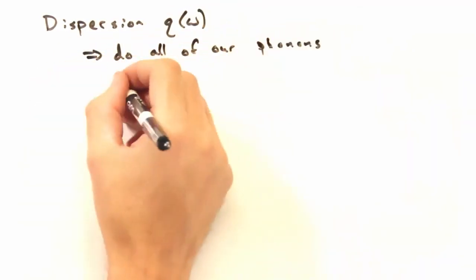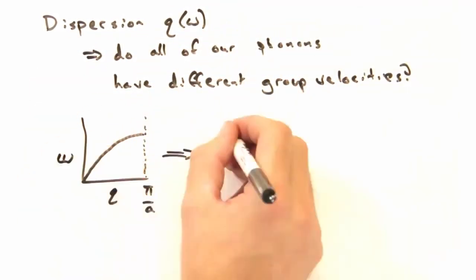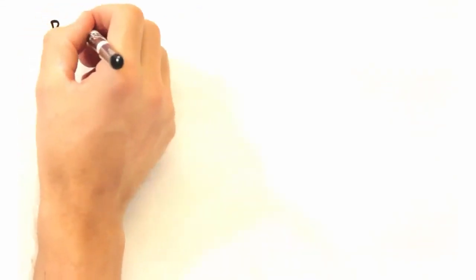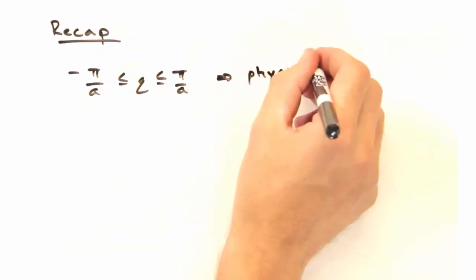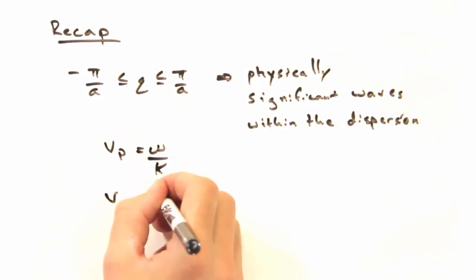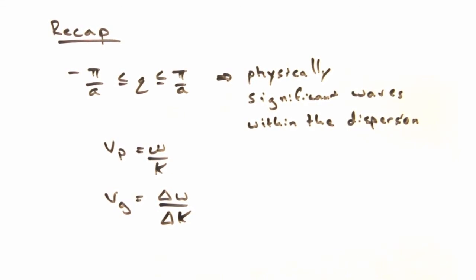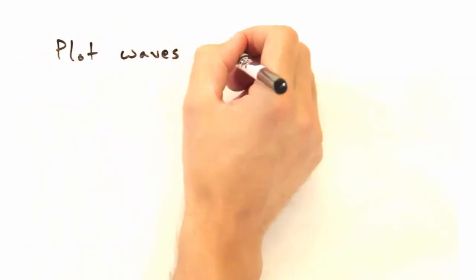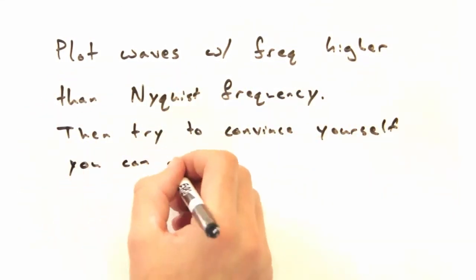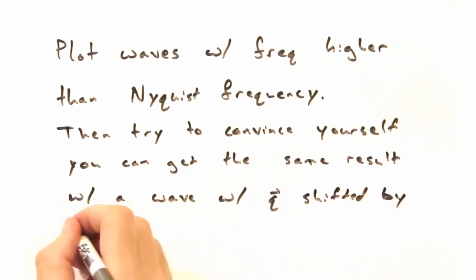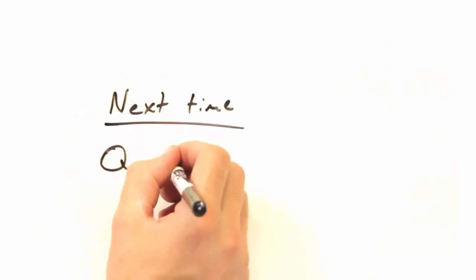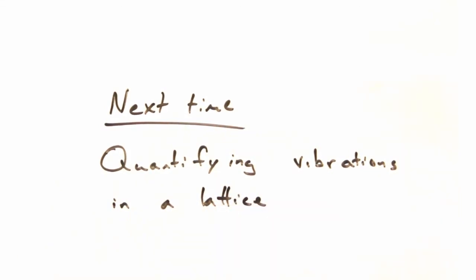Going back to our dispersion then, does that mean that all of our phonons have different group velocities? Looks like it's a good time for a recap. Today we found q values between minus pi over a and pi over a will give us physically significant waves within our dispersion. Then we used our dispersion to find the phase and group velocities of our wave. Before we end today's video, it would be a good idea to plot waves with frequencies higher than the Nyquist frequency and try to convince yourself you can get the same result by a wave shifted by 2 pi over a. Thanks for watching today's Solid State Physics in a Nutshell. Next time, Eric and I will be looking at quantizing vibrations in a lattice. See you then!